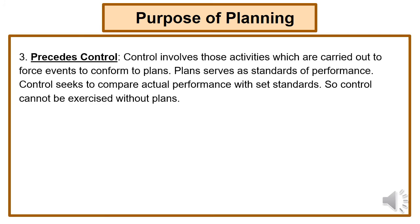The next purpose is that planning precedes control. The test of formal planning is in accepting objectives and providing guidelines for reaching them. Control involves those activities carried out to force events to conform to plans. A plan serves as a standard of performance. Control seeks to compare actual performance with a set of standards, and control cannot be exercised without a plan. For controlling activity, planning must be done.